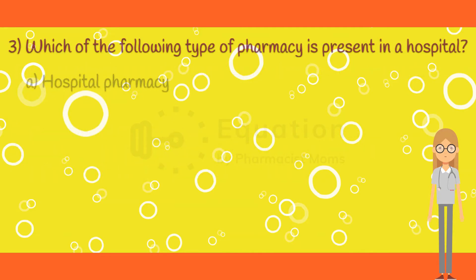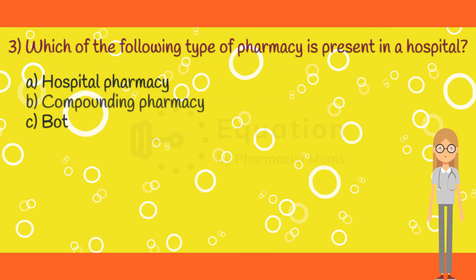Question 3. Which of the following type of pharmacy is present in a hospital? Option A: Hospital pharmacy. Option B: Compounding pharmacy. Option C: Both options A and B. Option D: None of the above options.